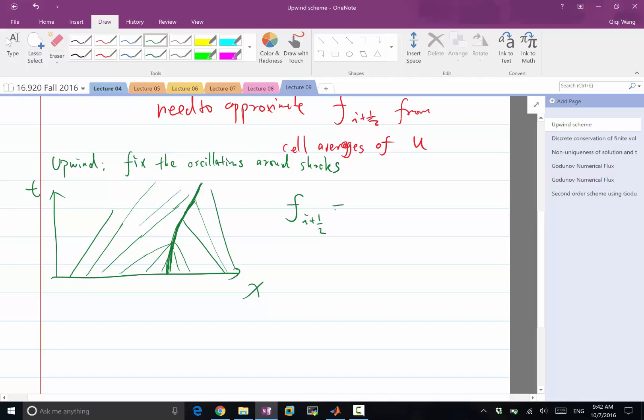We should be emphasizing one side of the interface more than the other side. Which side should we emphasize more? Which side should we use more information from? When we are computing f of i plus half, instead of taking the straight average between f of ui and f of ui plus one, if we want to weigh them, one heavier than the other, which one should we weigh more? Whichever side the wave is coming from. I want to weigh whichever side is coming from more.